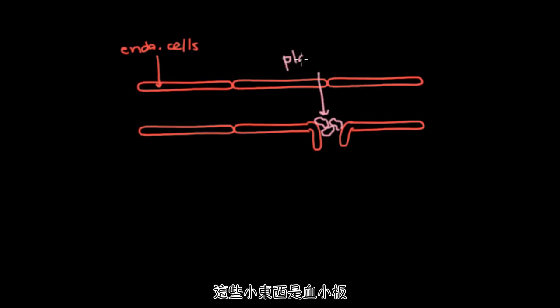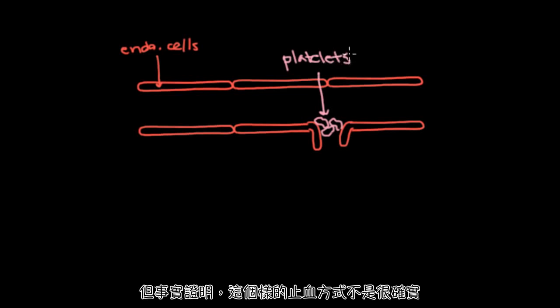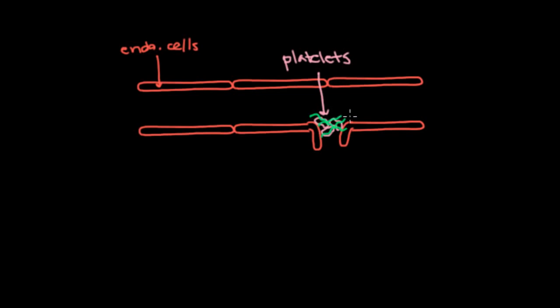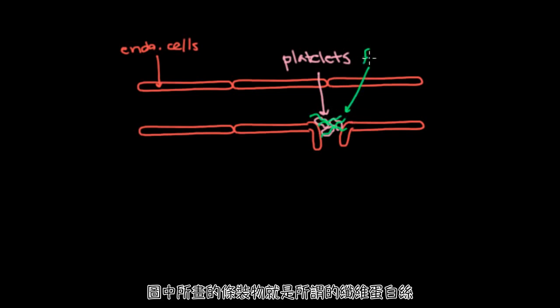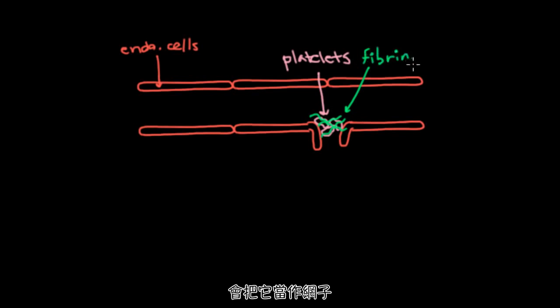So these little things are platelets. But it turns out that this plug is not quite solid enough, and so the body needs a second mechanism to solidify the plug. And that mechanism is what we're going to talk about most in this video. And I'm drawing that mechanism here. What I'm drawing is little fibrin strands, which will come and act as a kind of mesh to hold the platelet plug together solidly.